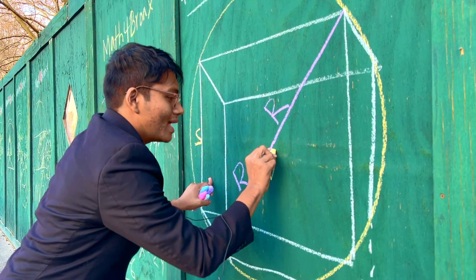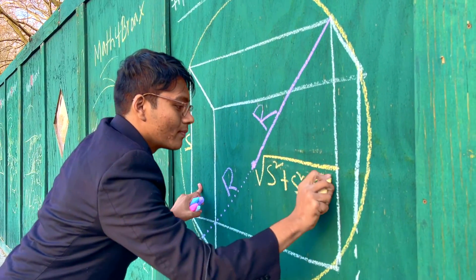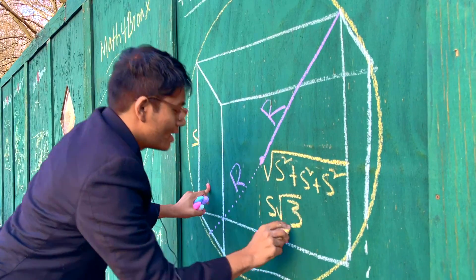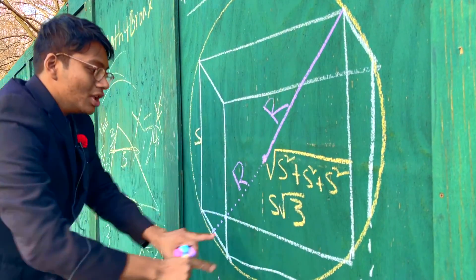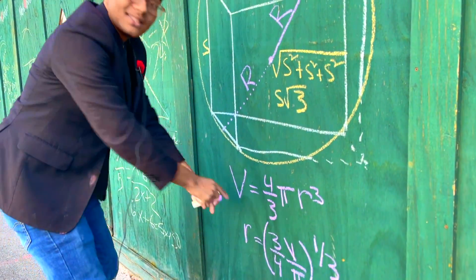Well, we can just break out the Pythagorean theorem. It's going to be s squared plus s squared plus s squared. That's 3s squared, so we have s root 3. So that means the biggest diagonal of the cube, s root 3, has to equal twice the radius.